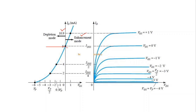In summary, even for VGS greater than 0 volt, the drain current ID will not be restricted at IDSS but will increase further. That's all for the transfer characteristics of the depletion type MOSFET. Thank you.